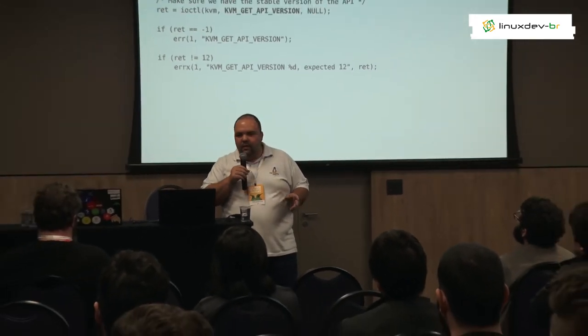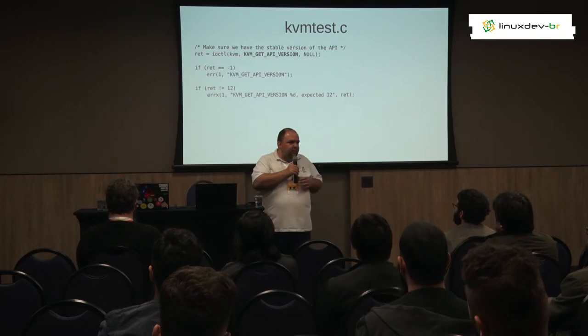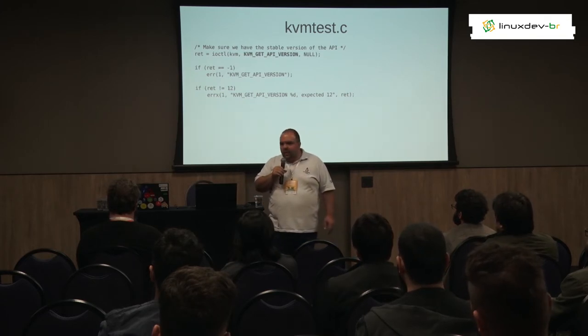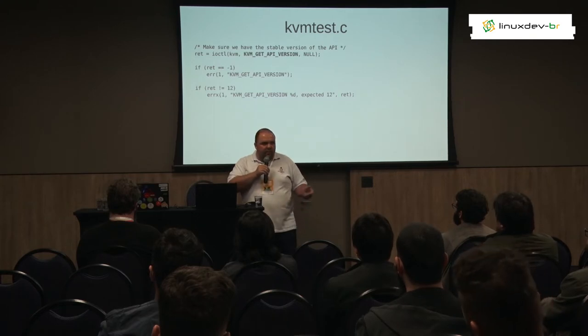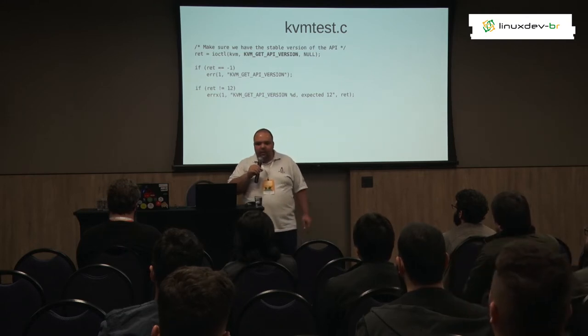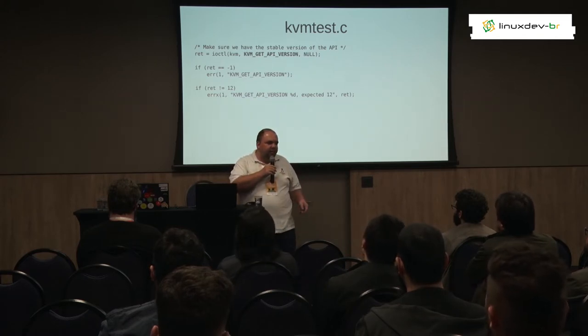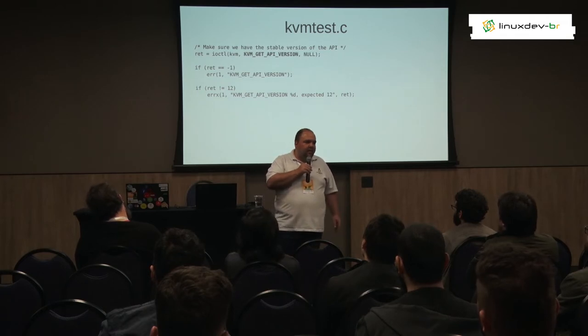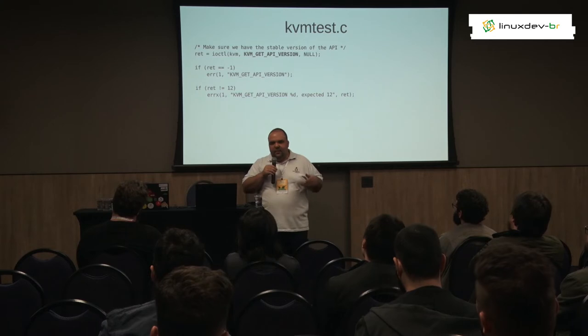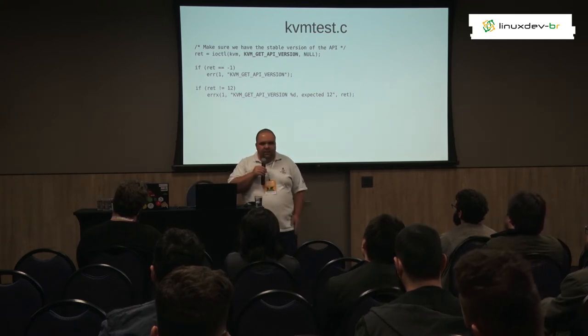The first call to the KVM API is KVM_GET_API_VERSION. It does the communication to the KVM using IOCTL — basically a way that you can talk to a character device by writing specific commands. Each API name here is actually a number that you write to the device, and on the kernel side, the device interprets it and performs an action based on this number.